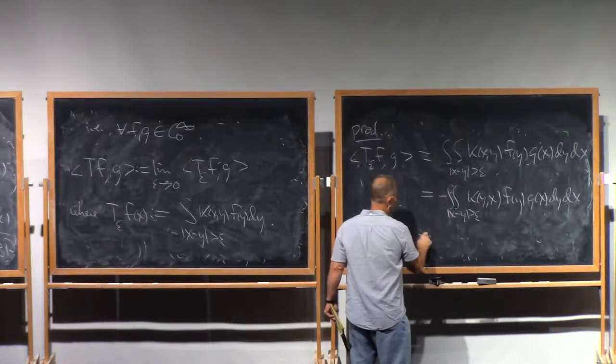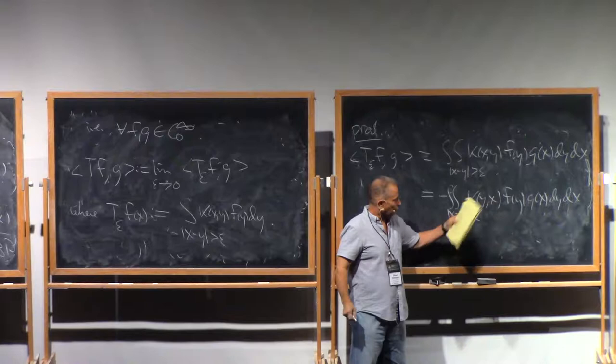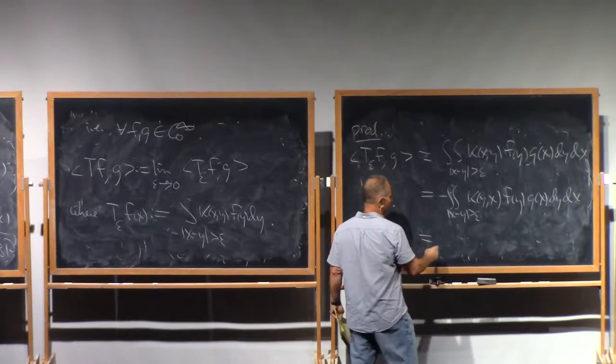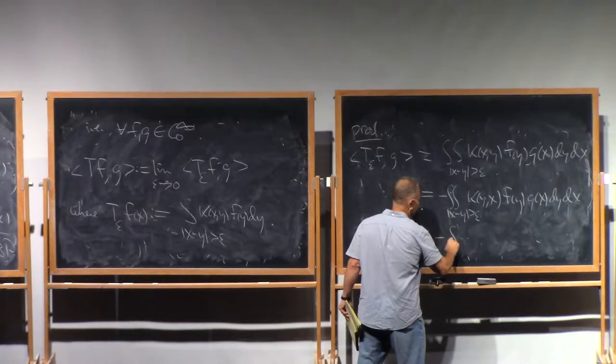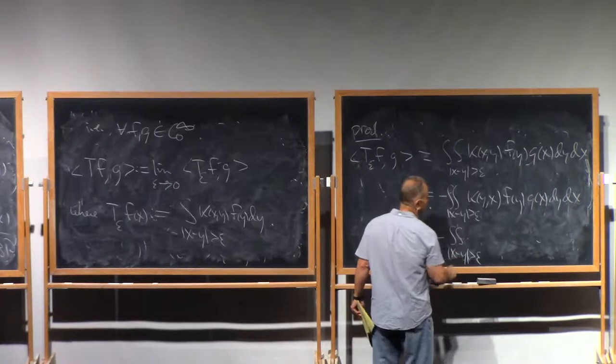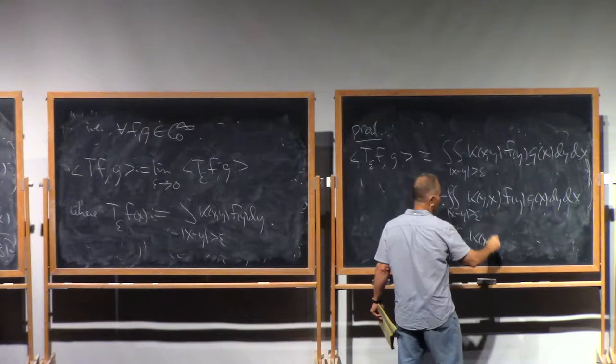Now we're going to do something totally stupid. We're going to use the fact that y and x are dummy variables so we can just interchange their roles because this truncation is symmetric with respect to x and y. So this is the same as minus integral where x minus y is bigger than epsilon, K of xy now,